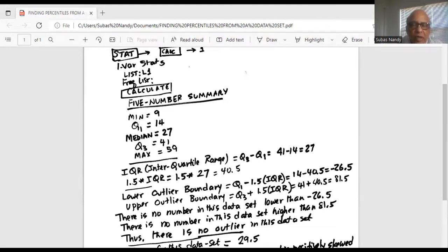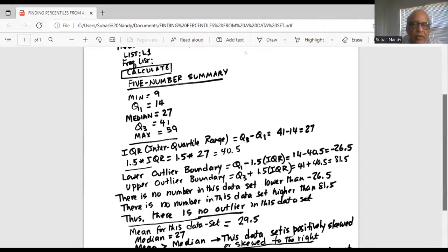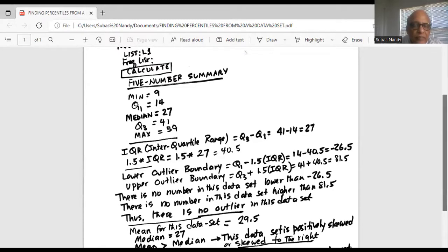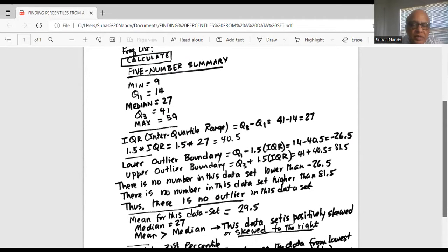This is 41 minus 14, which equals 27. Then we multiply the IQR by 1.5, which is 40.5. Then we find the lower outlier boundary. Some books call it lower outlier fence, which is Q1 minus 1.5 times IQR, which in our case is 14 minus 40.5, which is minus 26.5.